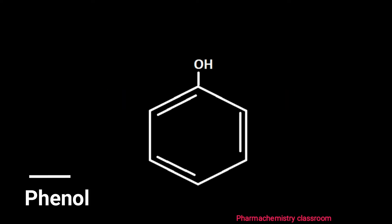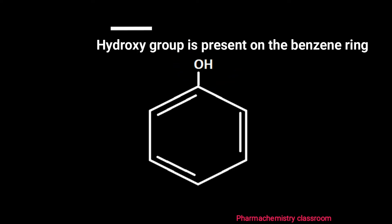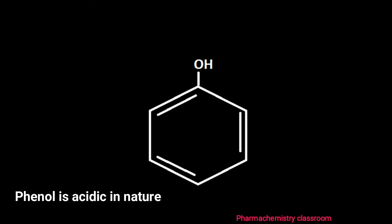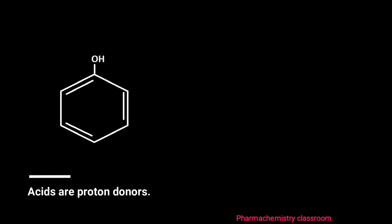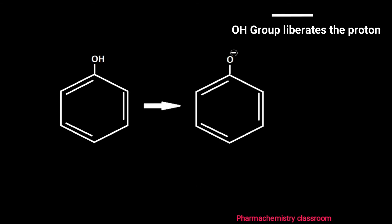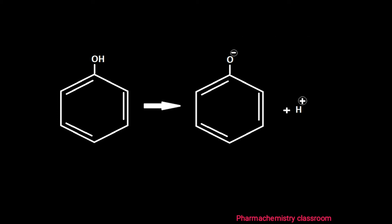Phenol is an aromatic compound. You can see phenol is hydroxybenzene — the hydroxy group is present on the benzene ring. Phenol is acidic in nature; it is a weak acid. We know acids are proton donors. Here the OH group liberates a proton, or a base can abstract a proton from the OH group of phenol, and we get a phenoxide ion.